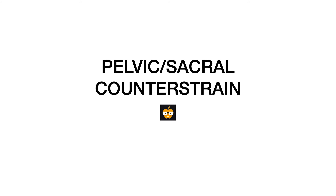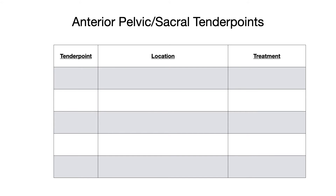This is the final lesson in the counterstrain section, and in this lesson we'll be continuing our conversation about counterstrain tender points by focusing on the pelvic and sacral region. Let's start by focusing on the anterior side. Our first tender point is the psoas tender point, located two-thirds of the way from the ASIS — the anterior superior iliac spine — to the midline, which refers to where the vertebrae are.